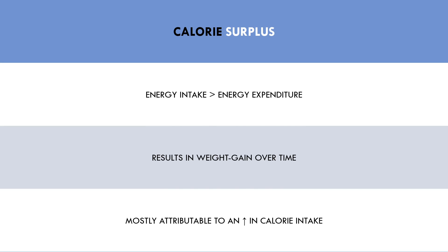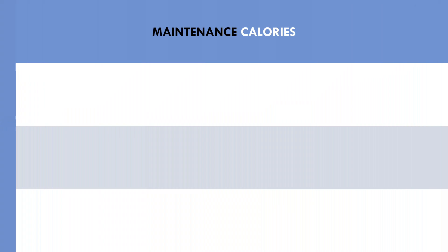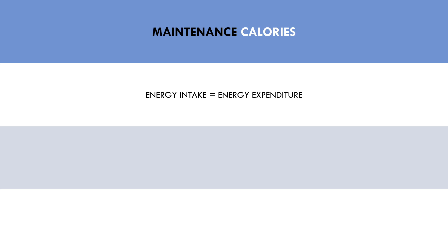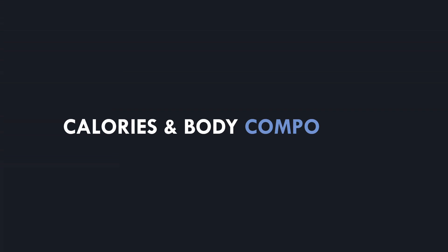And the last form of energy balance we can be in is maintenance calories. This is when energy expenditure is equal to energy intake over time. This results in a maintenance of body weight over time because fuel costs meet fuel demands. Body composition changes can still occur during maintenance calories, but body weight will be stagnant. So now that we understand the various forms of energy balance, let's now explore how energy balance influences body composition.